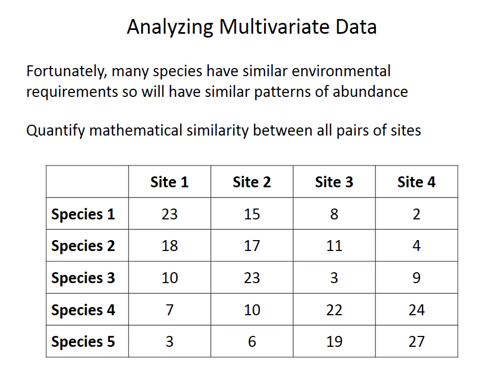Fortunately, we can take advantage of the fact that many species tend to have similar environmental requirements, and so they have similar patterns of abundance. For example, in the table at the bottom here, species 1 and species 2 tend to be abundant in the same samples in Site 1 and Site 2, moderately abundant in Site 3, and rare in Site 4. But species 4 and 5 have the opposite pattern — they are rare in the same samples like Site 1, and common in the same samples like Site 3 and Site 4.